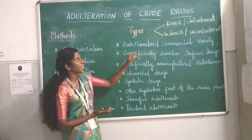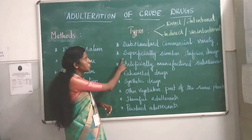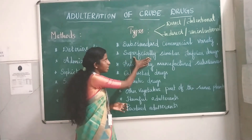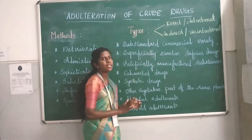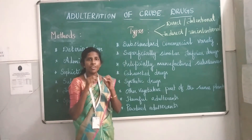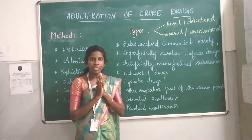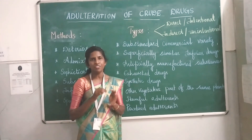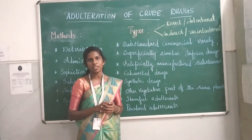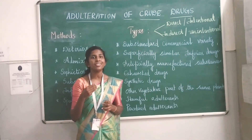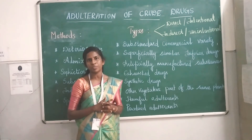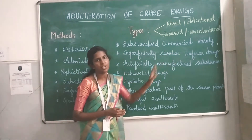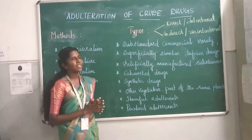The next type is substitution with superficially similar inferior drugs. The adulterated drug may be superficially similar to the original — for example, if the original drug is green in color, the substitute may also be green. However, when checking chemical constituents and therapeutic efficacy, the substituted or adulterated drug will be totally different from the original drug.